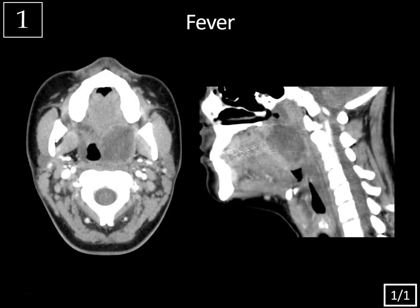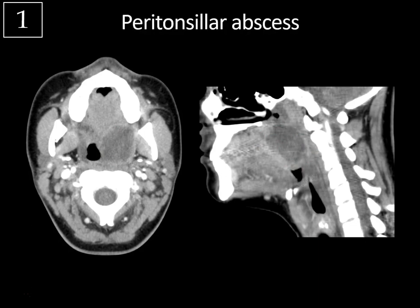Case 1, history of fever, CT neck. So we've got axial and sagittal contrast-enhanced CT scans of the neck at the level of the oropharynx. We have a large rim-enhancing fluid collection, centrally hypodense, in the region of the left tonsillar pillar and the left palatine tonsil. There it is on the sagittal view with that rim enhancement and central hypodensity, and this is typical for a peritonsillar abscess.